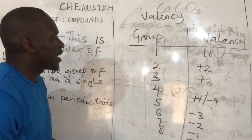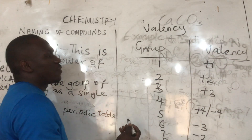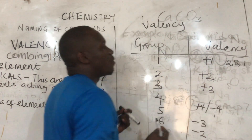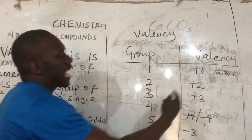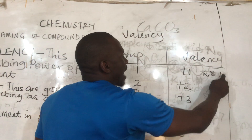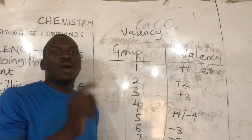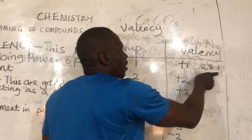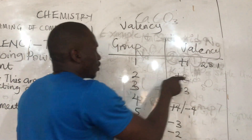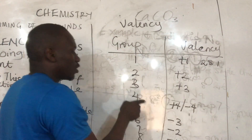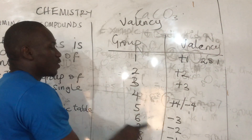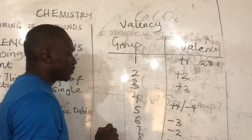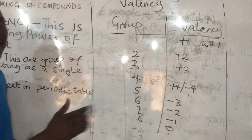How do we get Group 1 to plus 1? Every element in Group 1 ends with 1 — for example, 2, 8, 1 — meaning they have 1 electron at the outermost shell. They will lose this electron. In chemistry, when you lose an electron you have a plus sign — a cation. So Group 2 elements lose 2 electrons, Group 3 lose 3, Group 5 gain 3 electrons because there is a deficiency of 3 to make an octet, and Group 7 gains 1, giving −1.